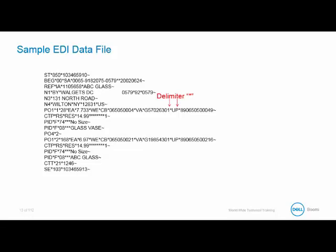First is the delimiter — this is a unique character which separates each of the data elements. In EDI, the delimiter is usually a star. Next is the segment, which is the business document logically grouped together with one or more data elements. Then there is the segment terminator — this is a unique character that identifies the end of a segment. In our case, it will be a tilde.